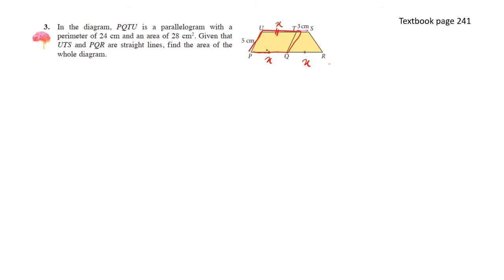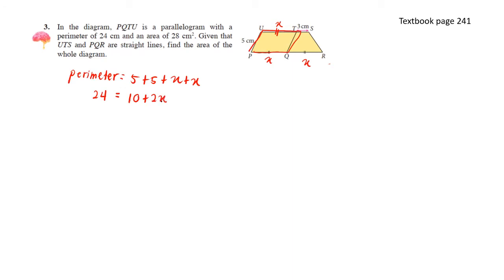Let's find the perimeter of PQTU. The perimeter equals 5 plus 5 plus x plus x. We know the perimeter is 24 centimeters. Simplifying gives us 10 plus 2x, so 2x equals 14 and x equals 7 cm.